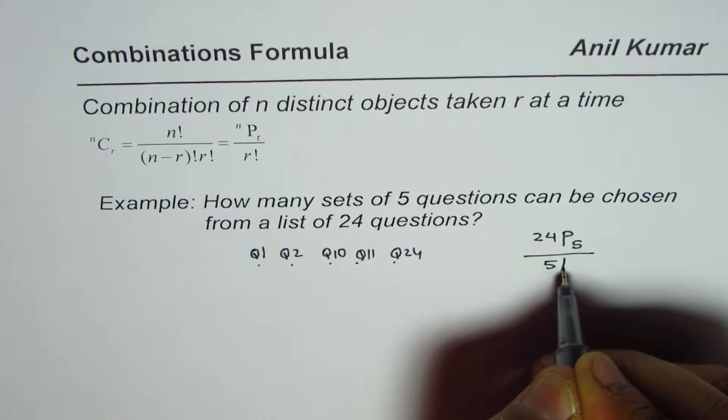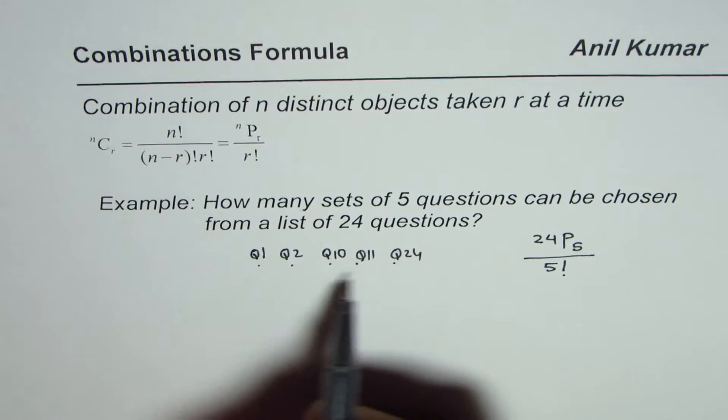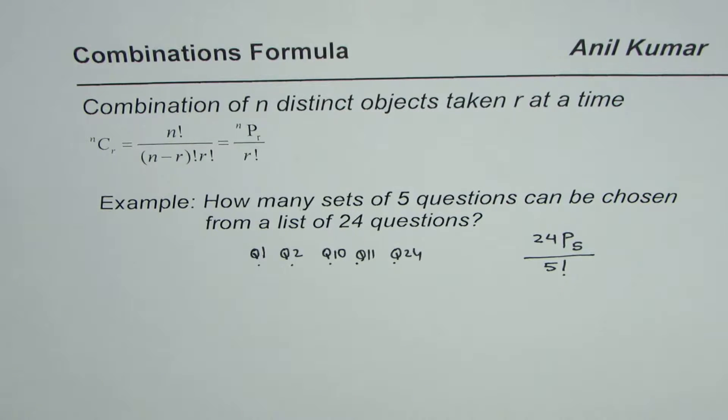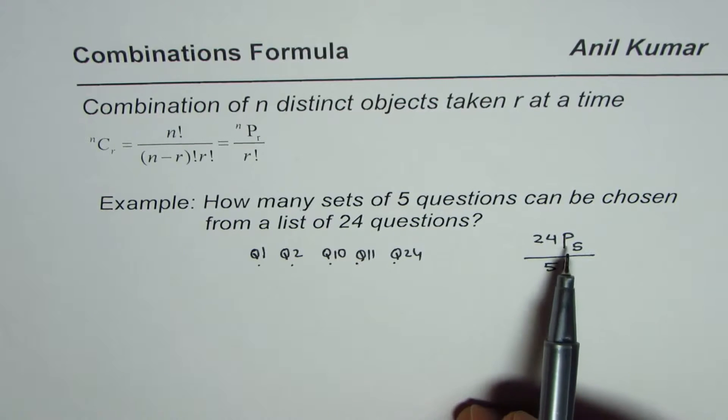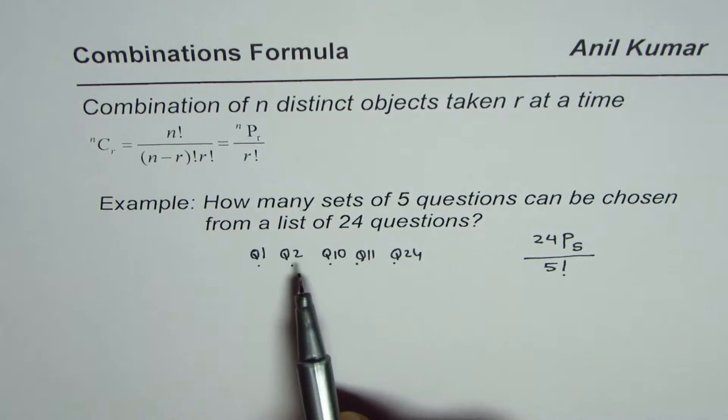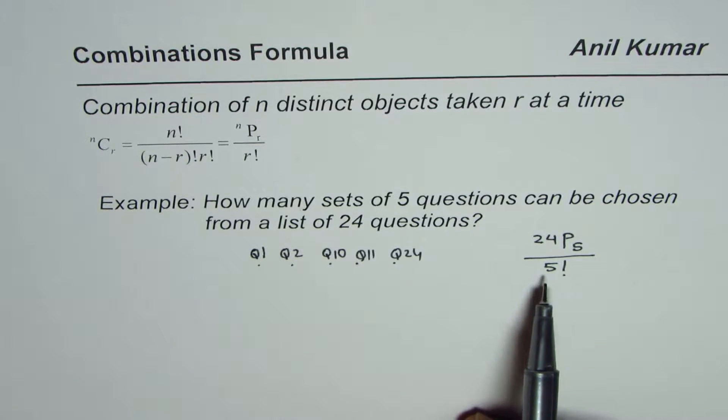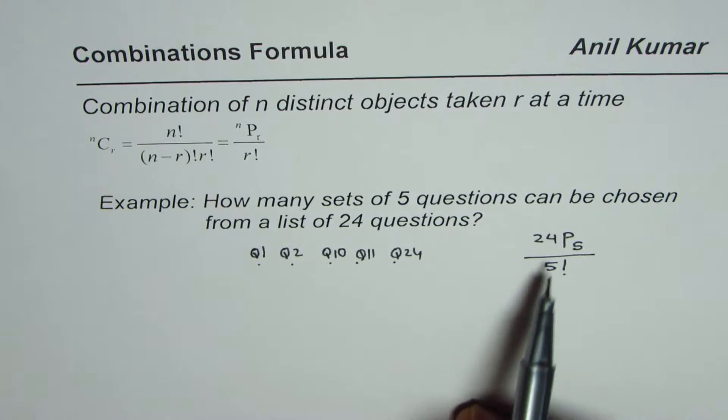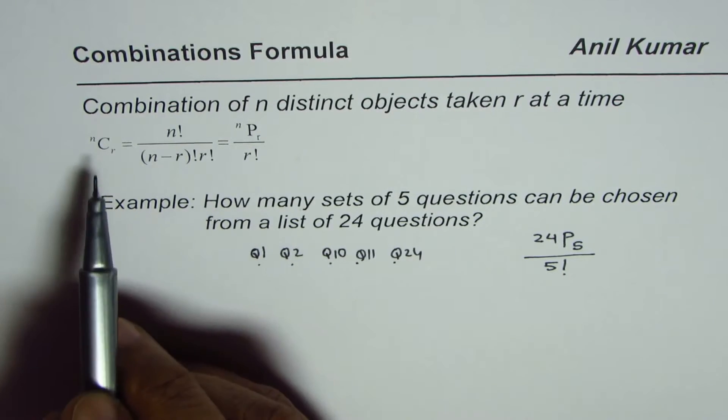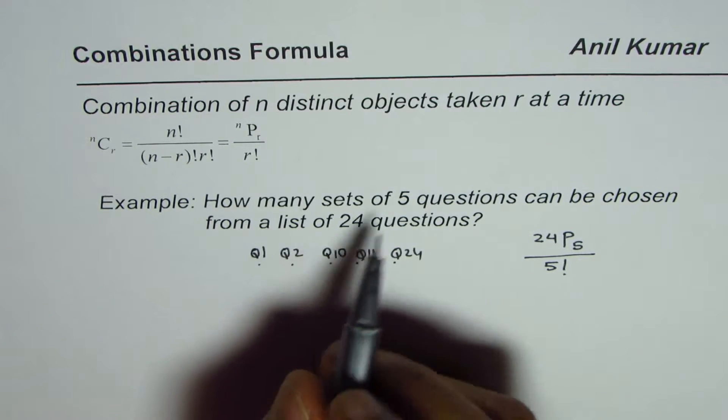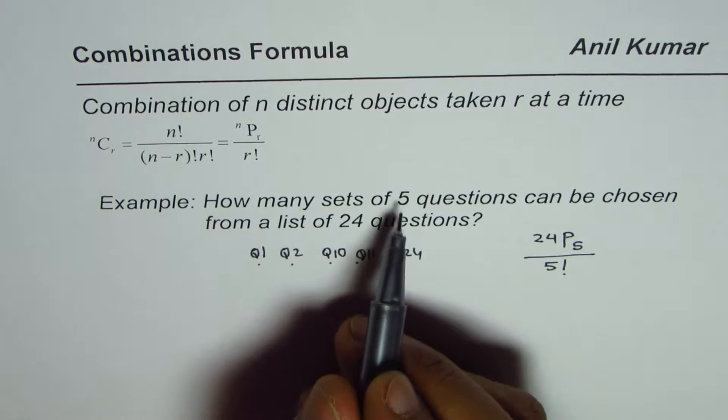Since the combination of these five is exactly the same, in general, when we're talking about permutation, the order is important, so they become different. We have to divide by 5 factorial. That is one solution. The second is using this formula itself.